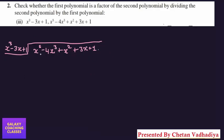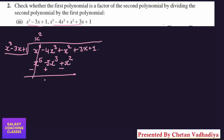Moving to question 2(iii): the first polynomial is x³–3x+1 and the second is x⁵–4x³+x²+3x+1. To get x⁵, we multiply x² by x³ giving x⁵; x² by –3x gives –3x³; and x² by 1 gives x². After changing signs, x⁵ cancels and –3x³ cancels, leaving –x³+3x+1.